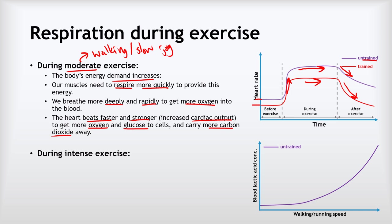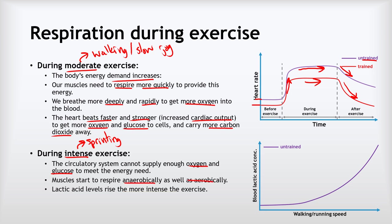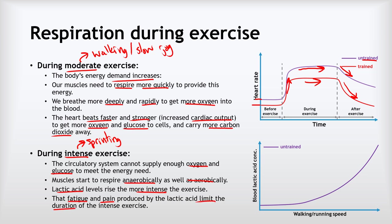During intense exercise — such as sprinting or carrying something very heavy — the circulatory system cannot supply enough oxygen and glucose to the muscles to meet the energy demand. So the muscles start to respire anaerobically as well as aerobically, causing lactic acid levels in the blood to rise, rising more quickly the more intense the exercise. This lactic acid causes fatigue and pain, limiting the duration of intense exercise. Even the fittest Olympic athlete can't sprint for much more than about a minute before the pain forces them to slow down.